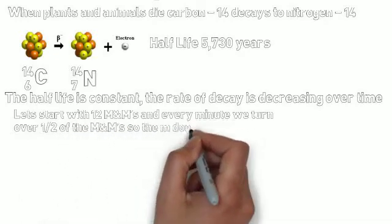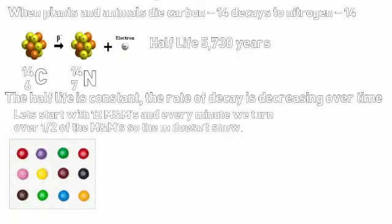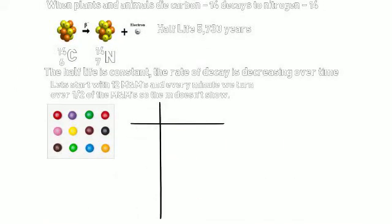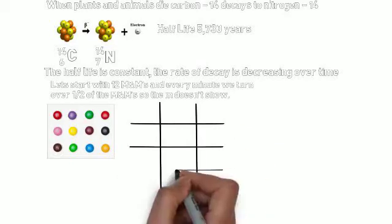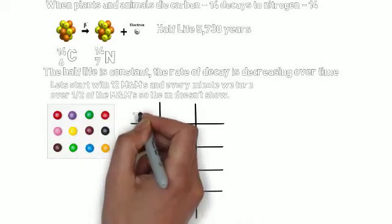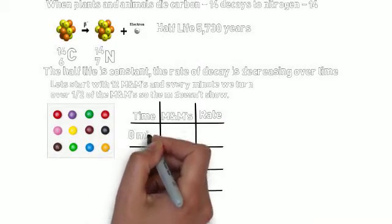We're going to start with 12 M&Ms, and every minute we are going to turn half of the M&Ms over, so the M doesn't show. And when we do that, what you can see is that the rate will decrease. The rate of turning the M&Ms over decreases. So we're just going to make a little grid here, so that we can work this out, and label time, M&Ms, and rate.